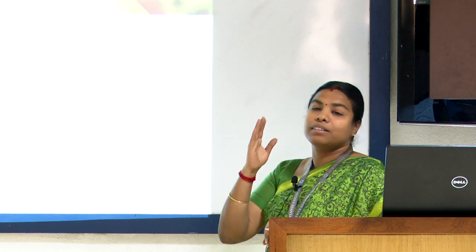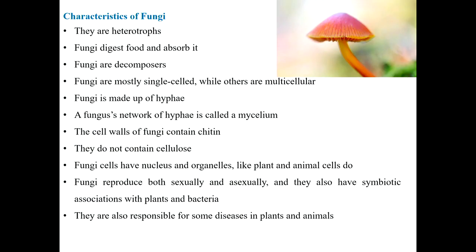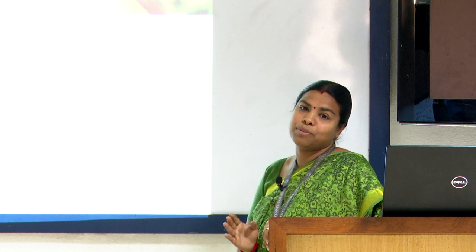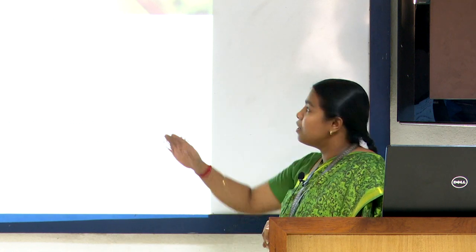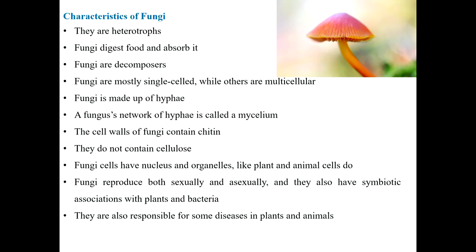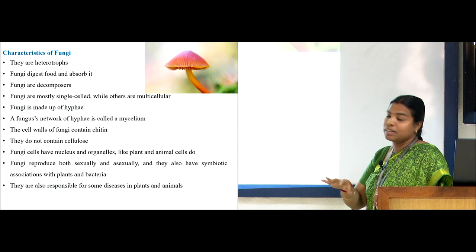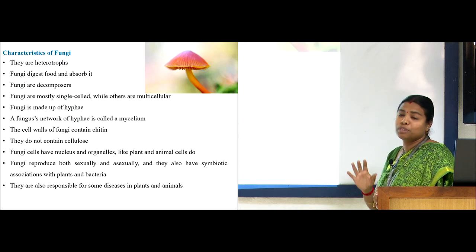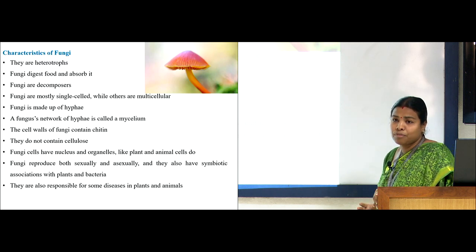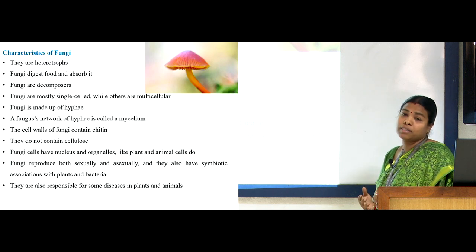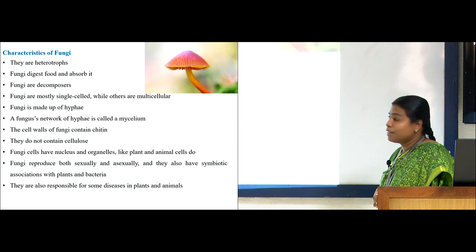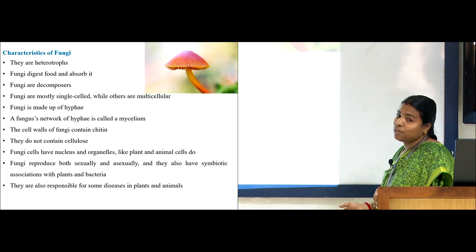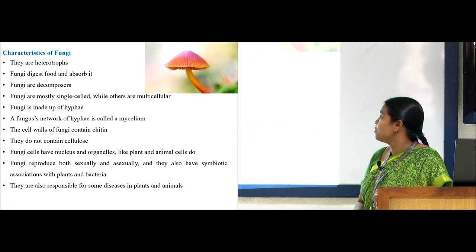What are all the characteristics that define an organism as fungi? They are heterotrophs because chlorophyll is completely absent, so they cannot synthesize their own food. Fungi digest food and absorb it — they cannot ingest food, but digest material using digestive enzymes and absorb the simplest molecules from the substrate. Fungi are best known as decomposers, converting complex organic substances into simplest molecules. Majority of fungi are unicellular — typical example is yeast — while others are multicellular.